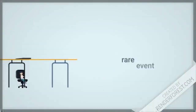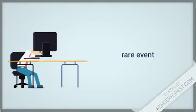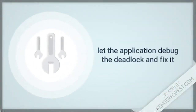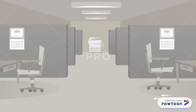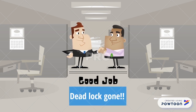Just like race condition, deadlock is an extremely rare event. The operating system usually allows the application to examine all waiting tasks and lets the application debug the deadlock and fix it. More commonly, we just let the deadlock happen and successively abort the lowest cost process until the deadlock disappears.